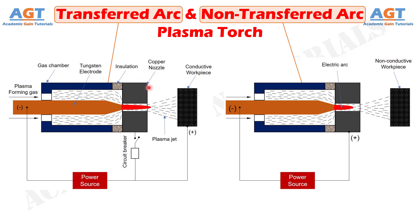The problem with this arrangement arises when the workpiece is not electrically conductive. In such cases, the copper nozzle is connected to the positive terminal or anode of the DC power source, while no connection is made with the workpiece. Such an arrangement is known as non-transferred arc plasma torch or indirect arc plasma torch. Here, electric arc forms between the electrode and the nozzle.